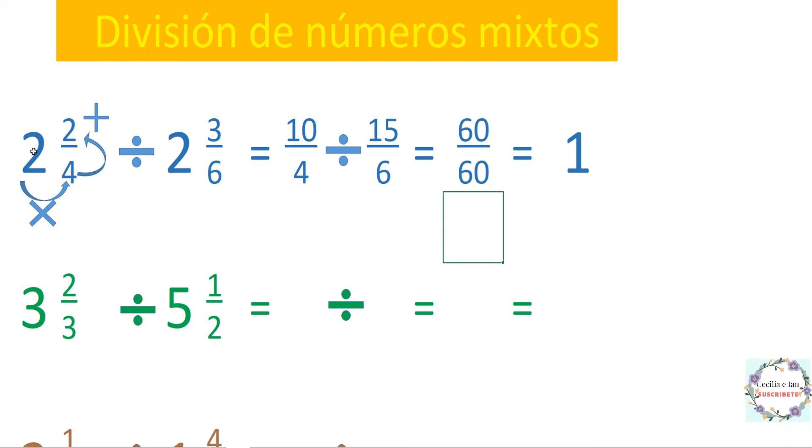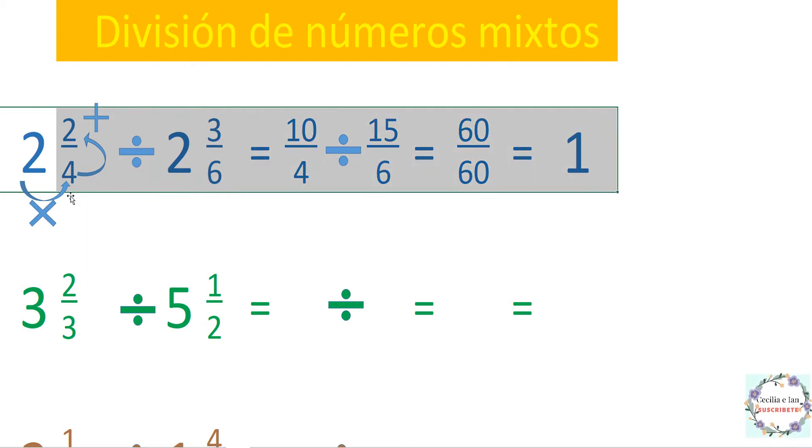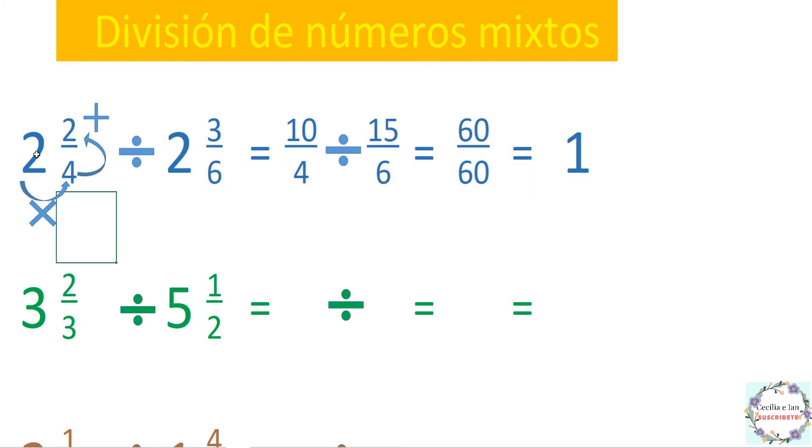De dividir 2 enteros 2 cuartos entre 2 enteros y 3 sextos, el resultado es 1, nos da 1 entero. Si lo ves directamente aquí, tú dices 2 entre 2 te da 1, y aquí también dices 2 cuartos es lo mismo que 0.5 o 1 medio, y 3 sextos es lo mismo que 0.5 o 1 medio. Si realmente aquí estamos dividiendo 2.5 entre 2.5 nos da 1.